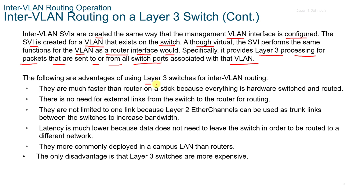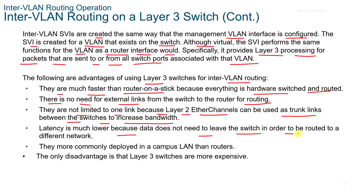There are advantages to using a Layer 3 switch for inter-VLAN routing. They're much faster than Router on a Stick because everything is hardware switched and routed. There's no need for external links from the switch to the router. They're not limited to one link because Layer 2 Ethernet channels can be used as trunk lines to increase bandwidth. Latency is lower because data does not need to leave the switch to be routed to a different network. They're more commonly deployed in campus LANs. The only disadvantage is that Layer 3 switches are more expensive.